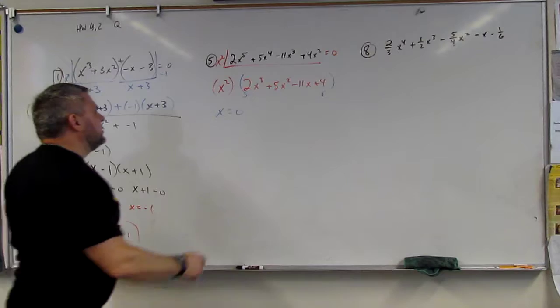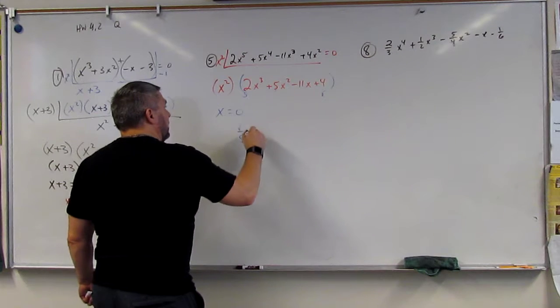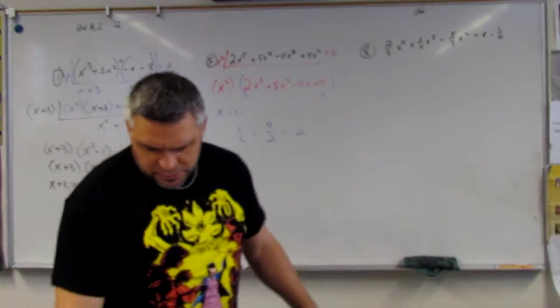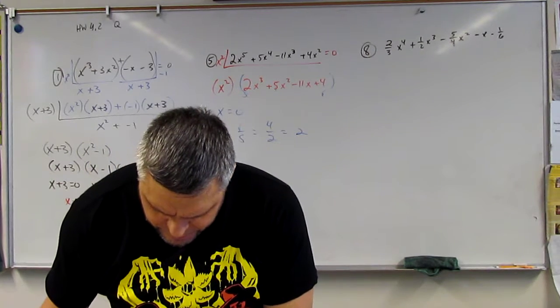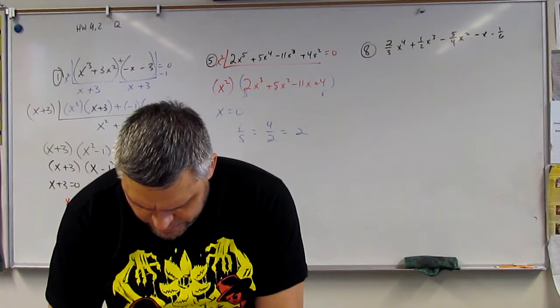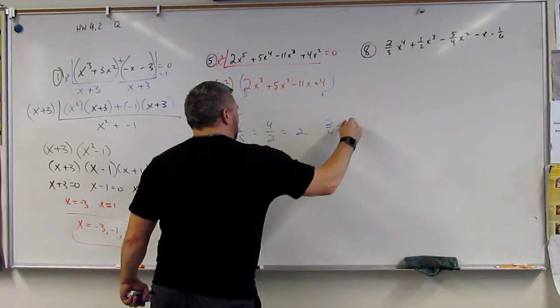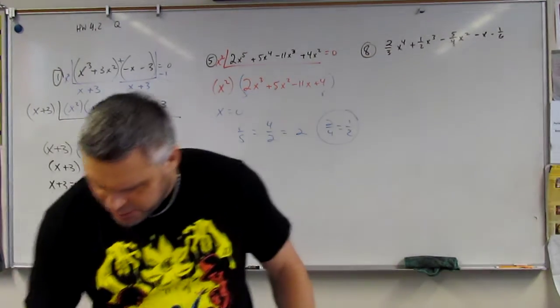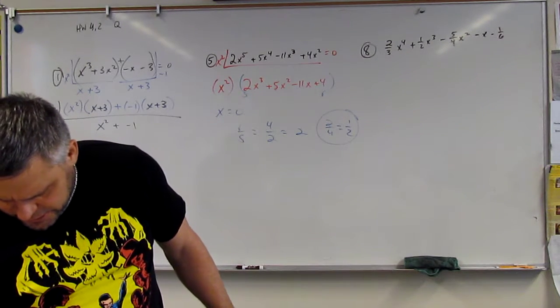So R over S would be 4 over 2, which would be 2. R equals 4 over 2 equals 2. It should be the opposite of that. It should be 2 over 4, which is one half. Oh, R is a leading coefficient? No, constant coefficient. Leading coefficient. Is that an R?